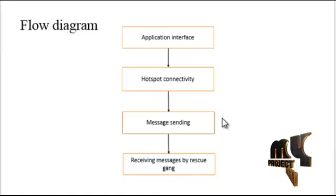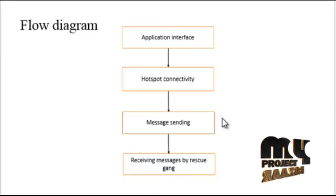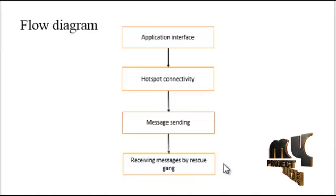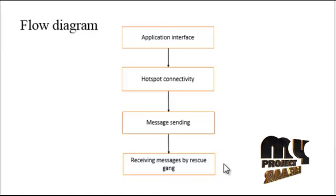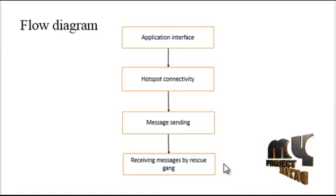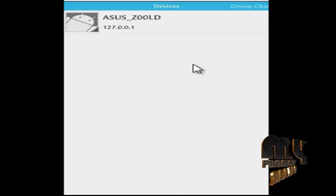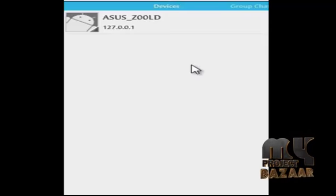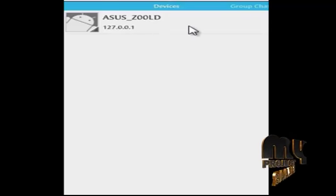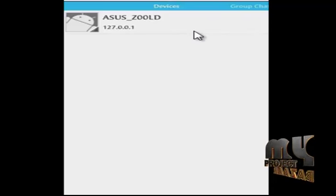By this messaging feature, we can send and receive messages via a hotspot without a cellular network connection. Receiving messages can be facilitated via a rescue gang, which can relay messages to reach end users in a rescue area. When you run our application, this home screen will appear, and you can see the devices which have been connected to your hotspot.